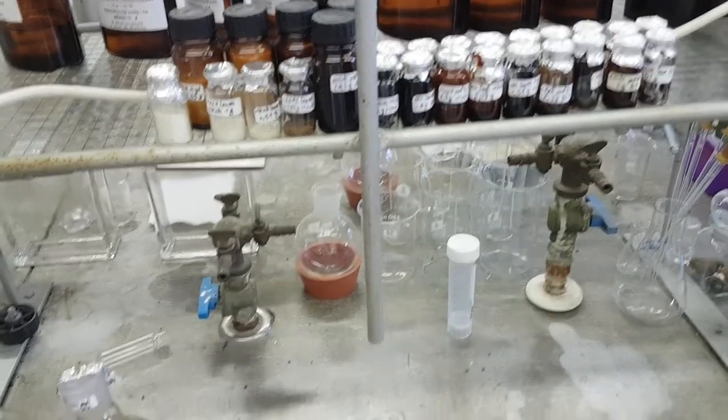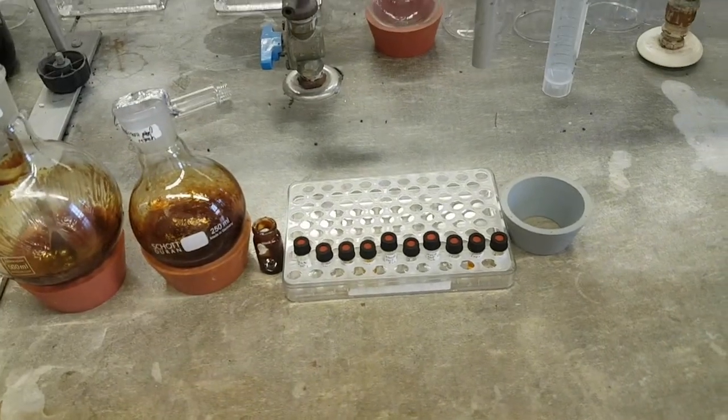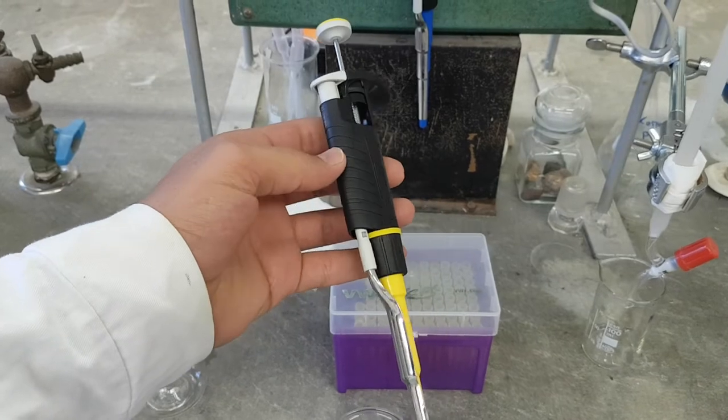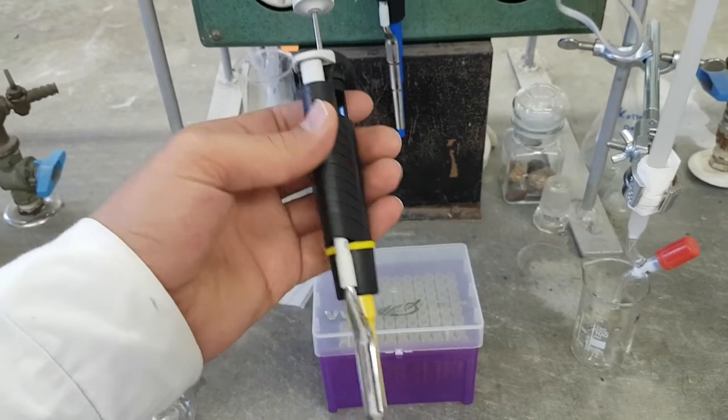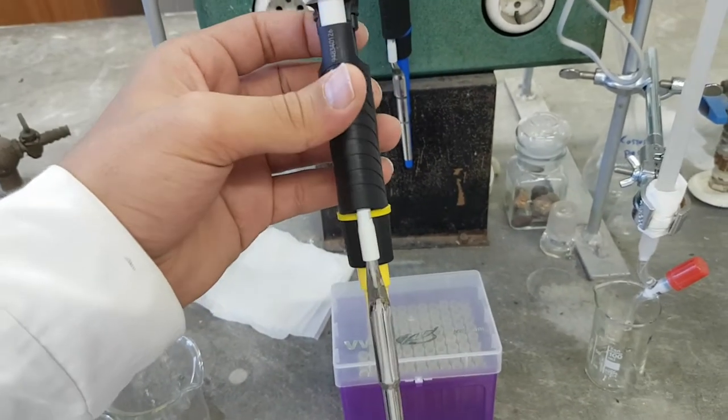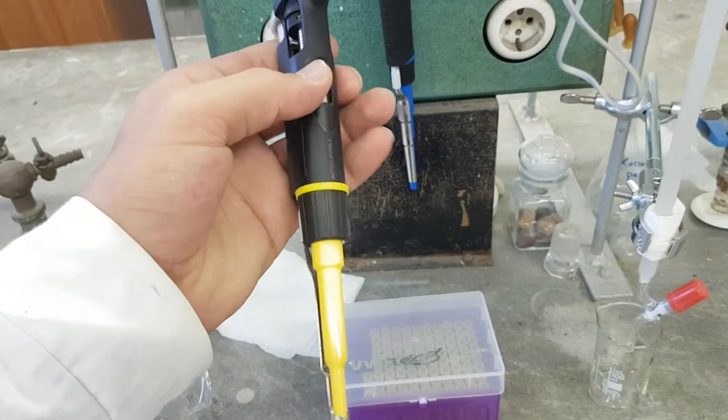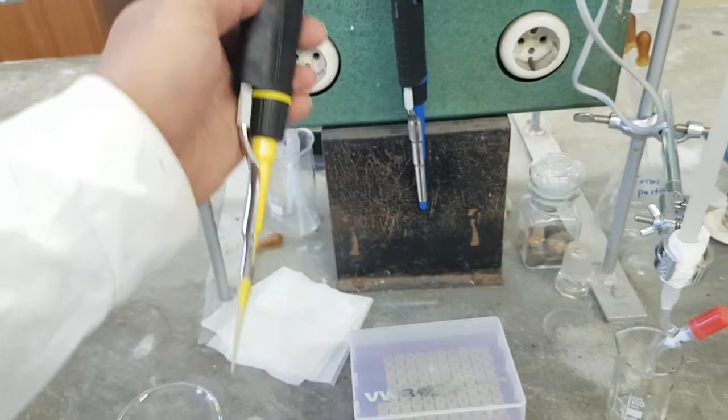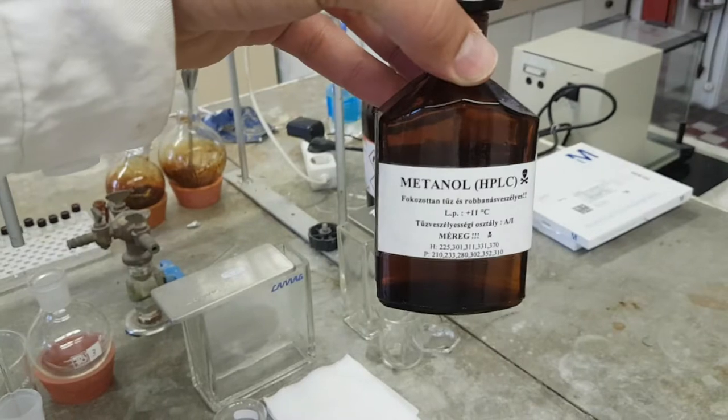You need to prepare your vials. Here you put about, using a micropipette, and you take one milligram from your extract and you dissolve it in one ml, right? So you take one ml of HPLC grade methanol. So you need to have methanol HPLC grade.